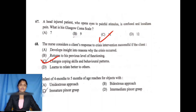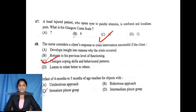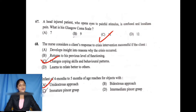Question 69: An infant of 4 to 5 months of age reaches an object with what approach? Option A is unilateral approach, option B is bi-dextrous approach, option C is immature and immediate. The answer is option A: unilateral approach.